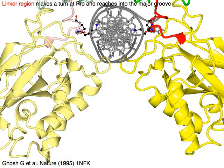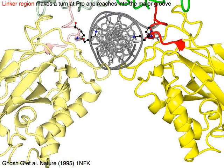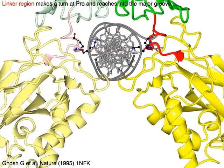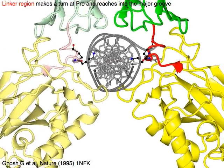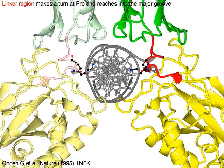The linker region in red makes a tertiary proline and reaches into the major groove of DNA.